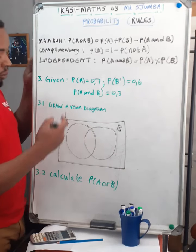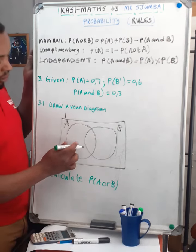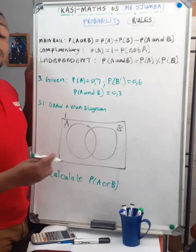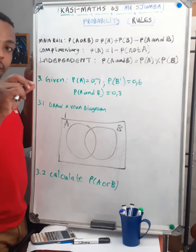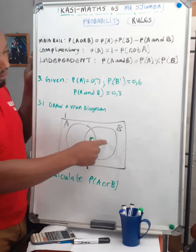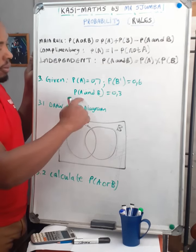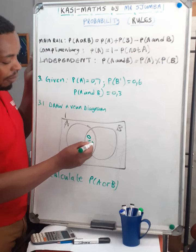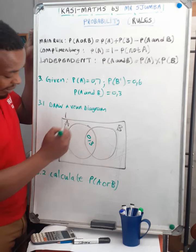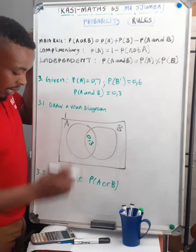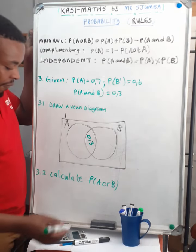All probabilities must add up to 1. Probability of A is 0.7. When drawing a Venn diagram, start with the intersection. With two events, start with the middle where they intersect. Probability of A and B is 0.3. The whole A circle should be 0.7, so the part of A outside the intersection is 0.7 minus 0.3, which is 0.4.